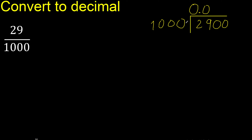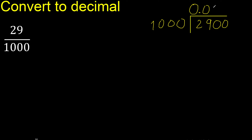Therefore, 1000 multiplied by which number is nearest to 2900? Multiplied by 3 is 3000, which is greater. Therefore multiplied by 2 is 2000.